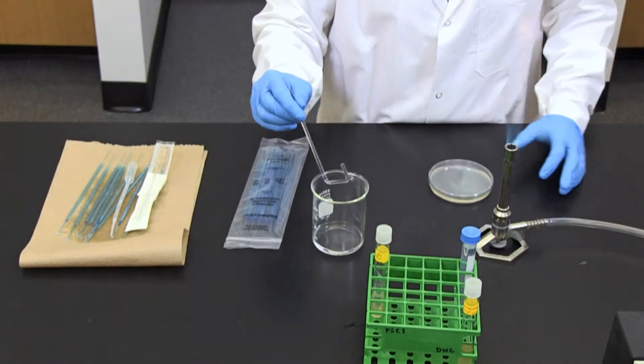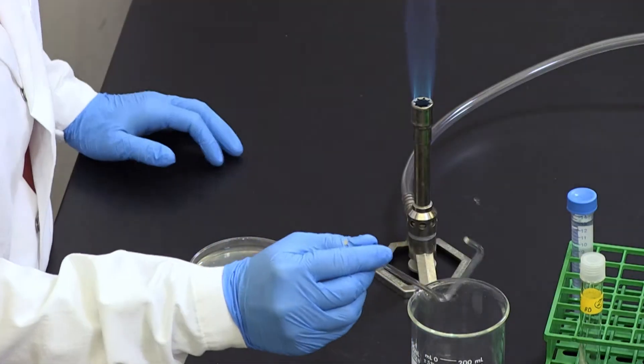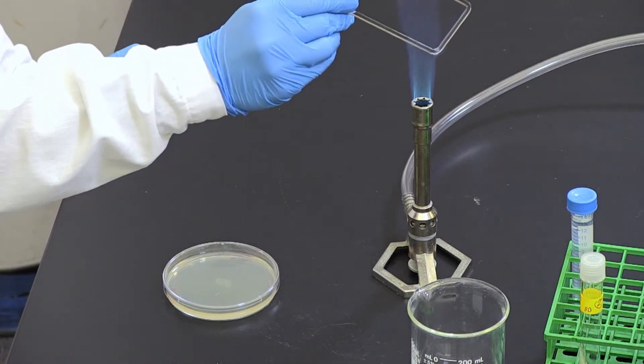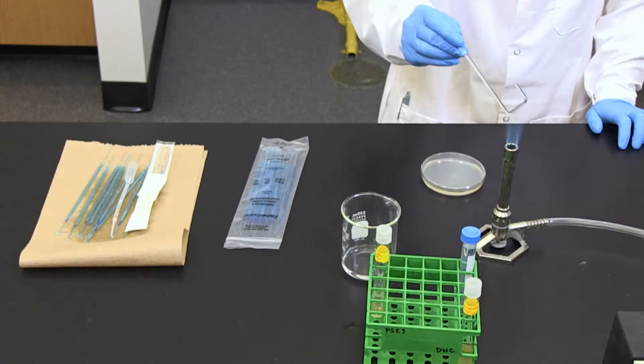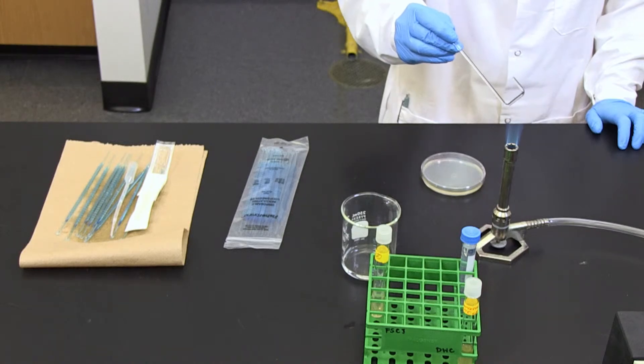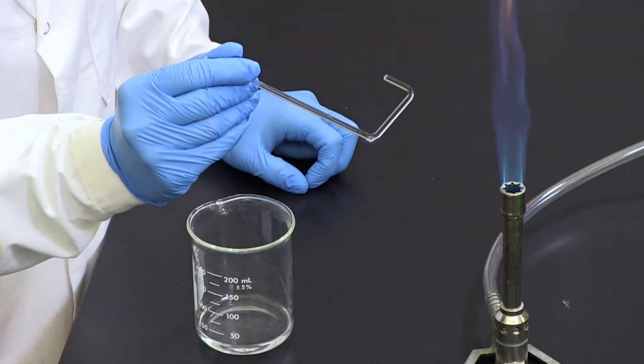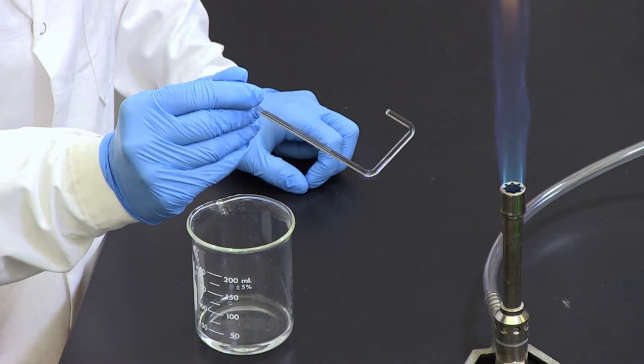Third, pass the glass cell spreader through the Bunsen burner with the bent portion of the rod pointing downward to sterilize. Keep the beaker of ethanol away from the flame and allow the alcohol to burn off the cell spreader completely. Let it cool for 10 to 15 seconds.